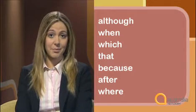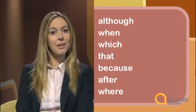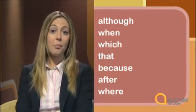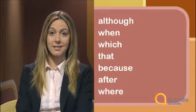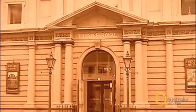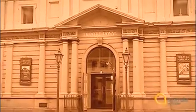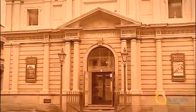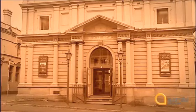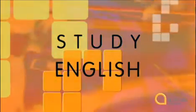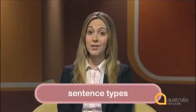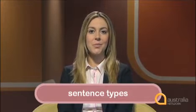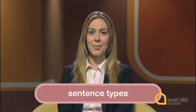There is one other type of sentence, which is a combination of compound and complex sentences, like this: When the theatre was first built, it was said to look like a two-storey house, and on the outside of the building you can see the stone window sills. Normally, people use a range of sentence types, as we've seen with the man talking about the theatre.